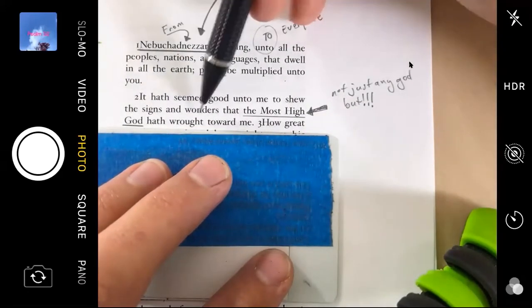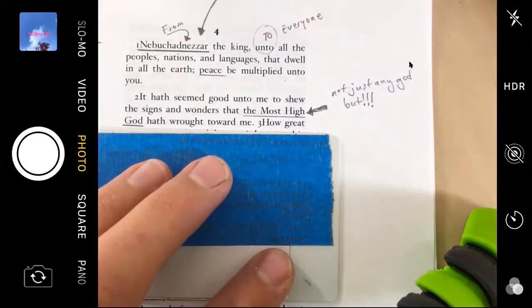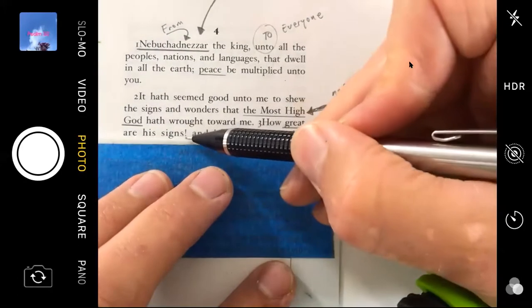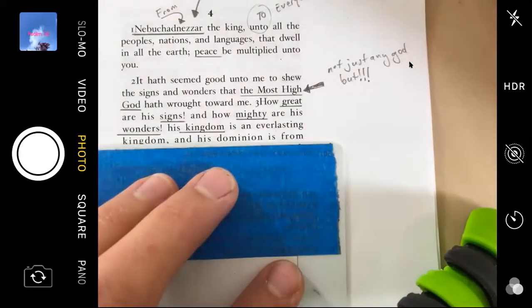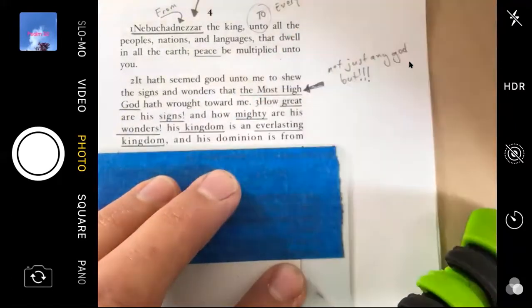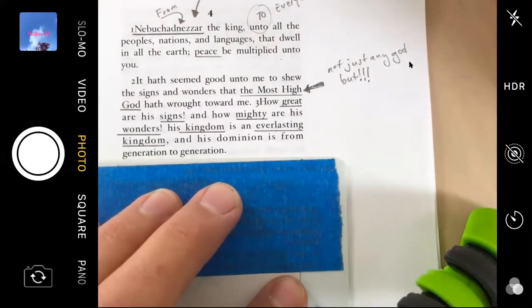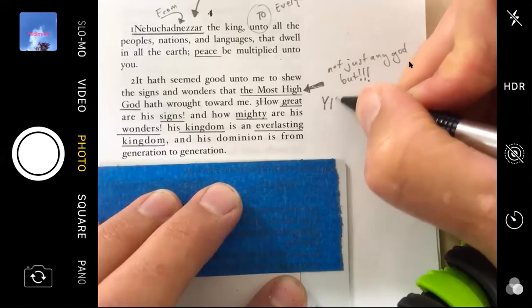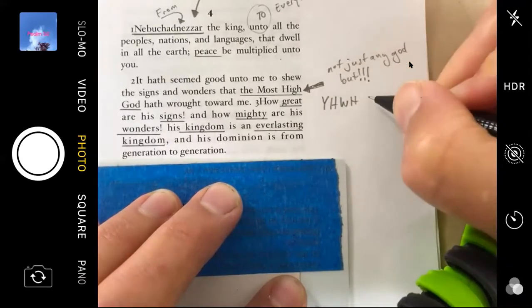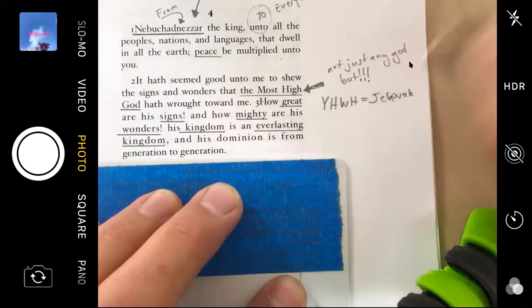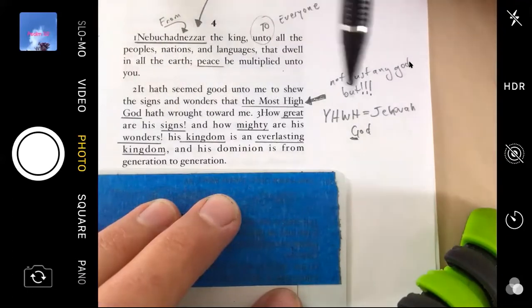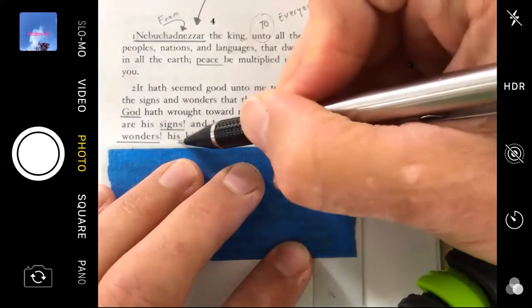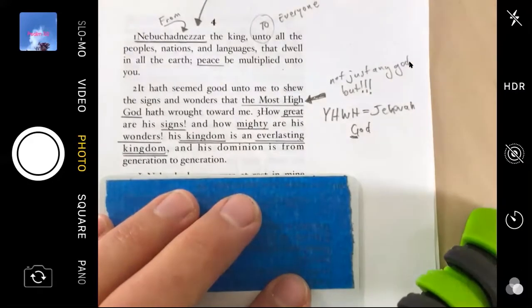I'm going to tell you the signs and the wonders that the Most High God has done toward me. How great are his signs and how mighty are his wonders. His kingdom is an everlasting kingdom and dominion is from generation to generation. He is talking about Yahweh, about Jehovah, about God with a capital G as we call it. And he's saying that this God has done signs and wonders and mighty things.